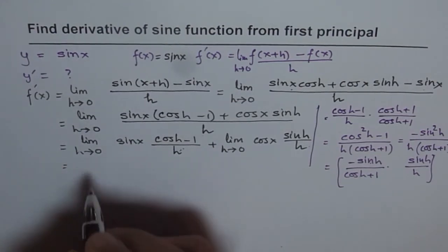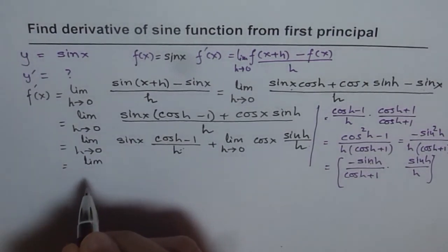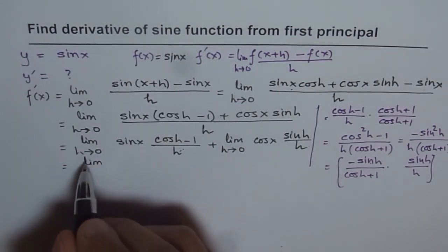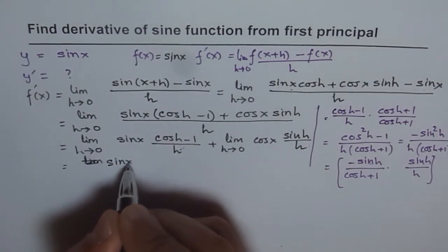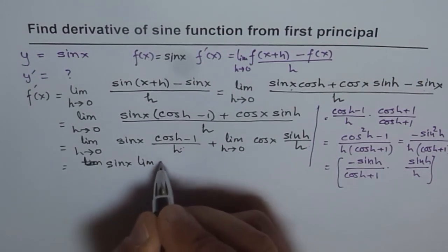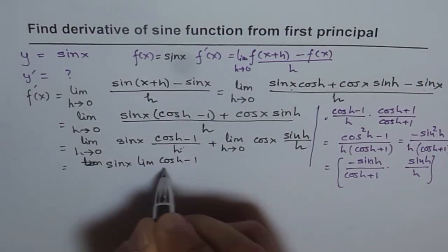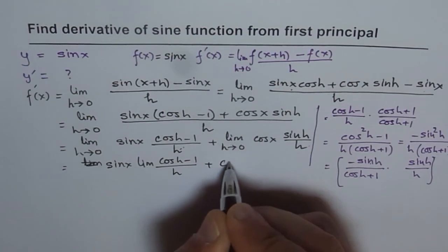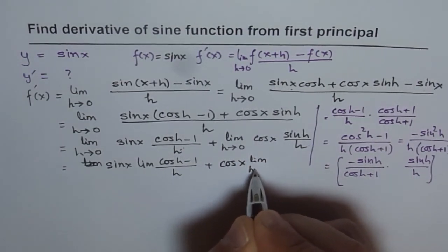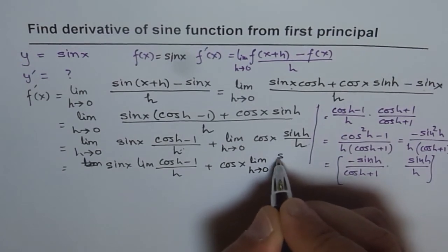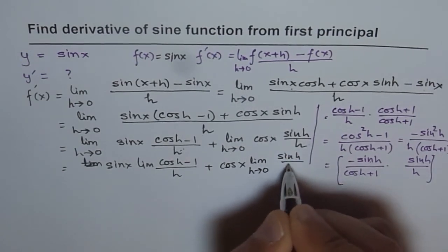So now we will solve further. Limit, so basically this, we can write this as sin x, limit of cos h minus 1 over h, plus cos x, limit h approaches 0 for sin h over h.